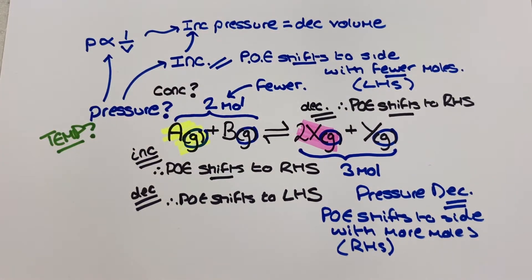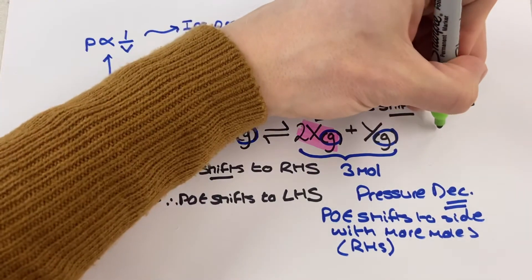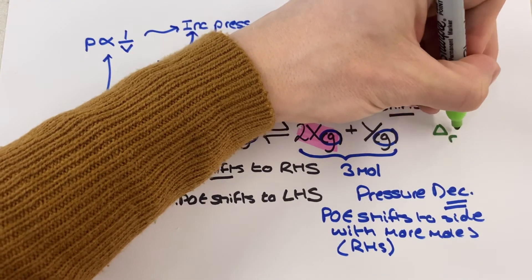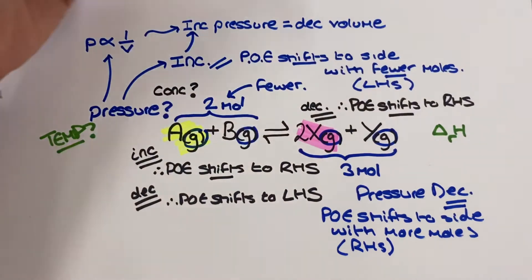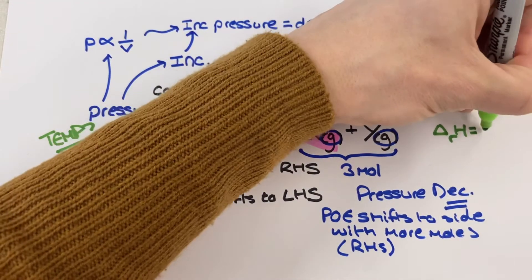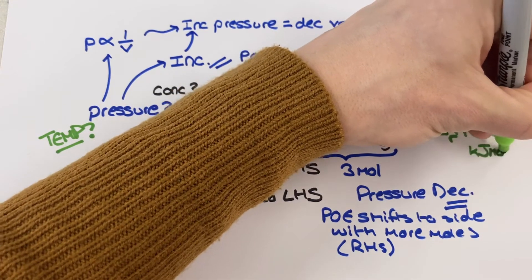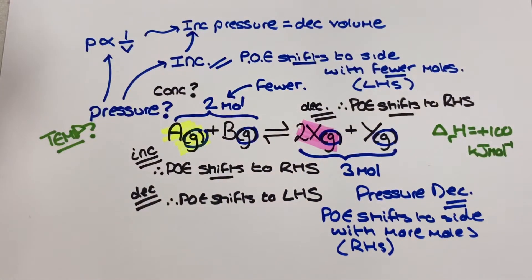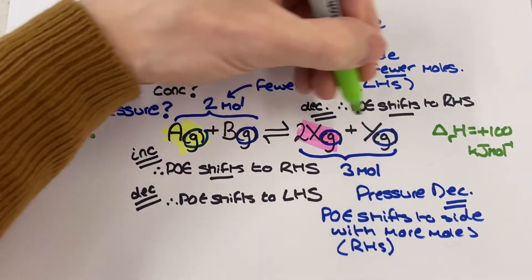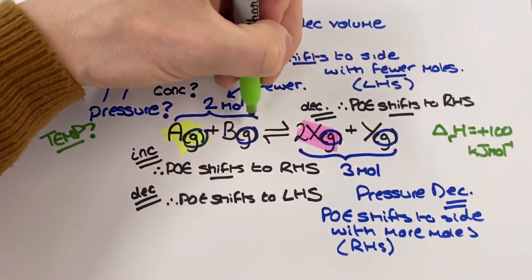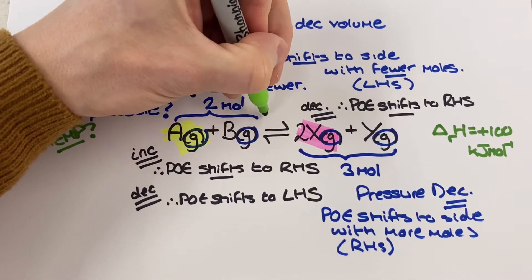Our final change to the position of equilibrium will be because of temperature. For temperature we need to know the enthalpy change for the forwards reaction which is normally stated alongside the equilibrium in the exam questions. We are allowed to assume that any stated enthalpy change alongside our equilibrium refers to the forwards reaction unless of course we are told otherwise.